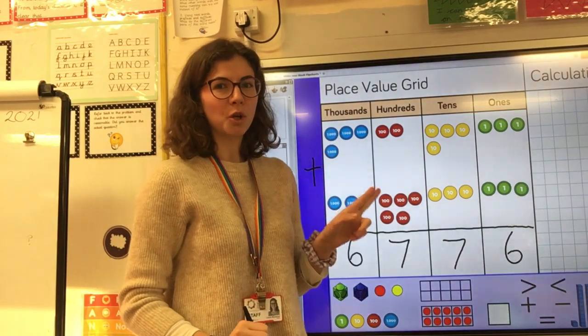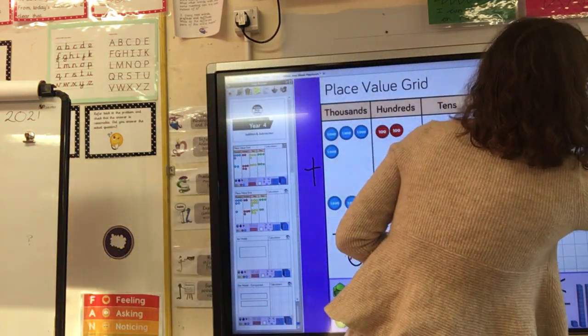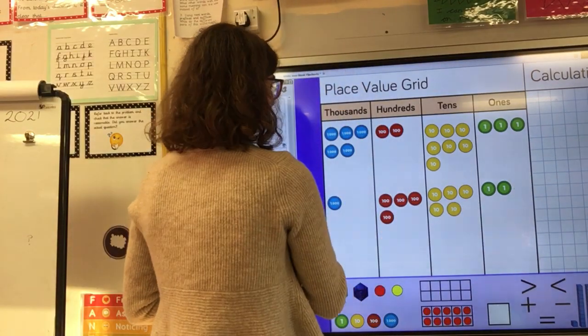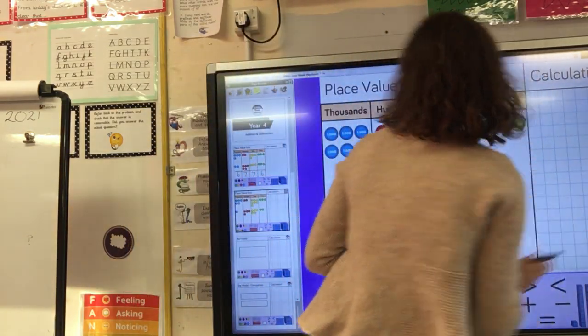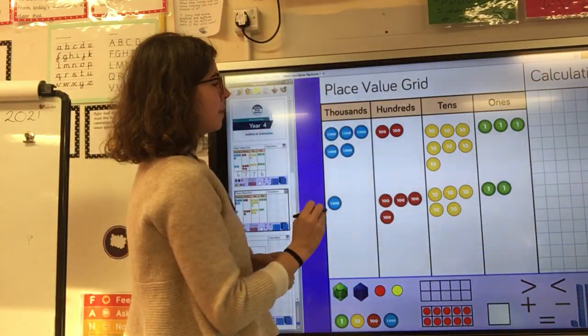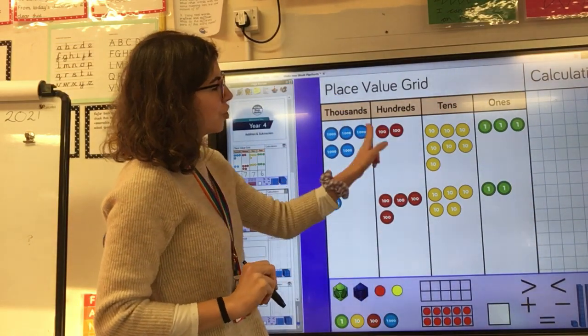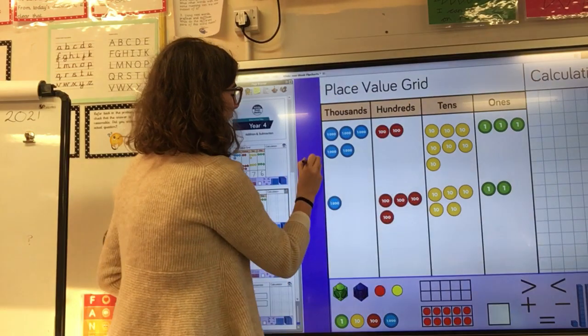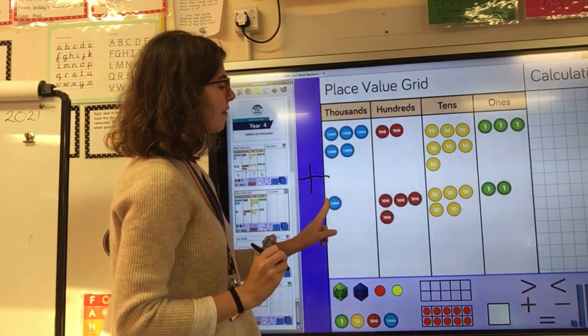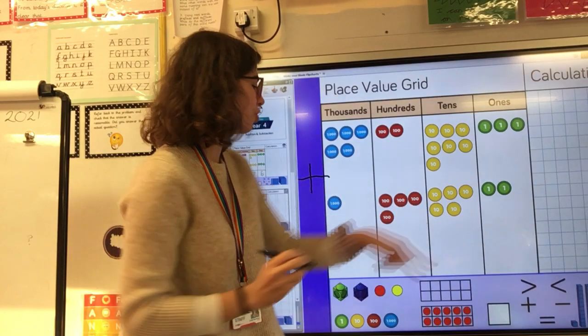Let's move on to look at one which uses exchange. So this time we've got some different numbers. We have got 5,273 add 1,452.